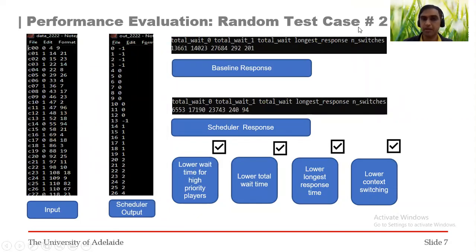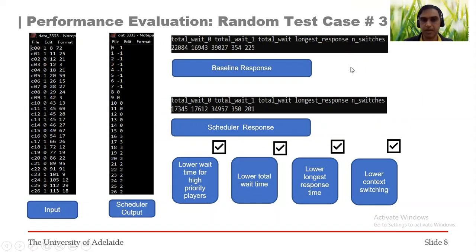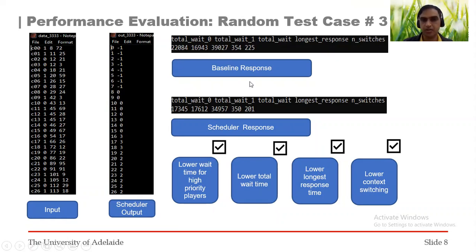Similarly, we have random test case two, which has also passed all the test criteria. And we also have random test case three, which has also passed all the scheduling criteria, but with a little margin — because now our queue size is bigger, which can distort some of the scheduling parameters.